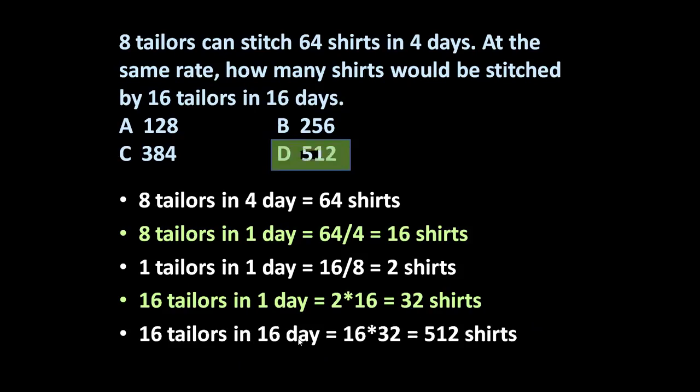Now, 16 tailors in 16 days will be able to stitch 32 into 16 is equal to 512 shirts. So friends, 16 tailors in 16 days can stitch 512 shirts.